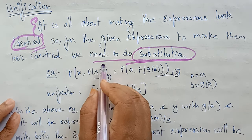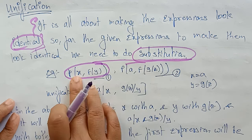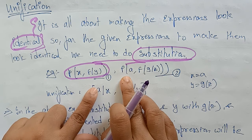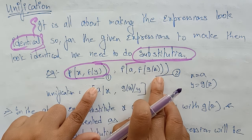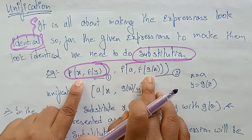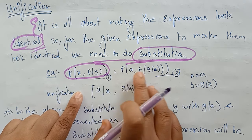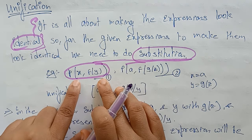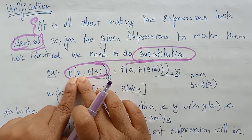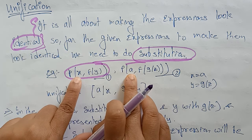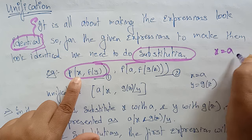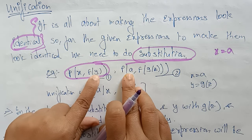Let's take this statement expression: P(X, F(Y)). This is one expression. And I am taking another expression: P(A, F(G(J))). So I can say these two statements are identical. How can I say these two statements are identical? Because X I can replace with variable A.